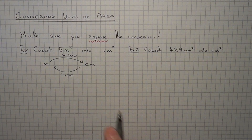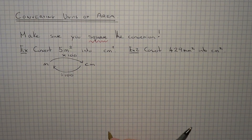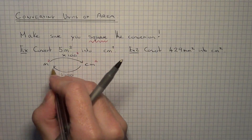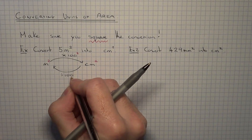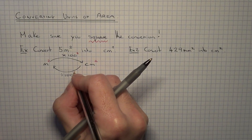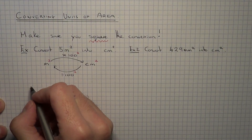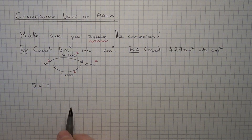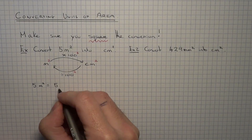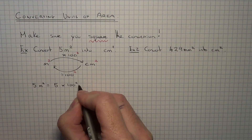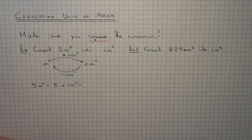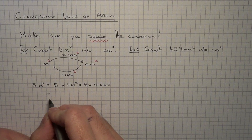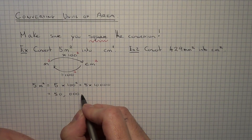However, this is metres squared and centimetres squared. So if we're doing metres squared and centimetres squared, we must square the conversion. From metres squared to centimetres squared, we actually times it by 100 squared. And from centimetres squared into metres squared, we divide by 100 squared. So we've got 5 metres squared — we multiply it by 100 squared. Now 100 squared is 100 times 100, which is 10,000. So 5 times 10,000 would be 50,000 centimetres squared.